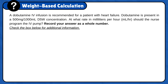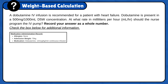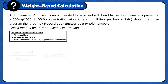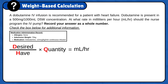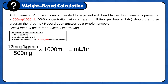A dobutamine IV infusion is recommended for a patient with heart failure. Dobutamine is present in a 500 milligram in 1000 milliliter D5W concentration. At what rate in milliliters per hour should the nurse program the IV pump? Record your answer as a whole number. First, set up the formula: desired over half times quantity. Add the unit answer, milliliters per hour. Start with half and quantity: 500 milligrams in 1000 milliliter D5W. For desired, plug in the doctor's order: 12 micrograms per kilogram per minute.